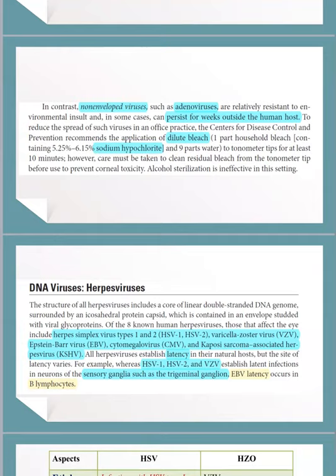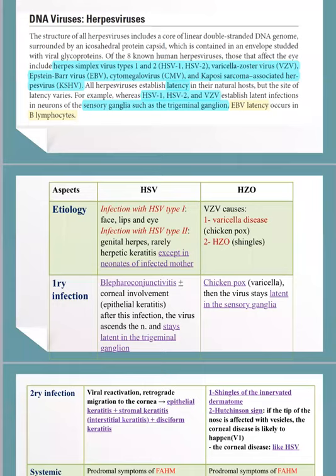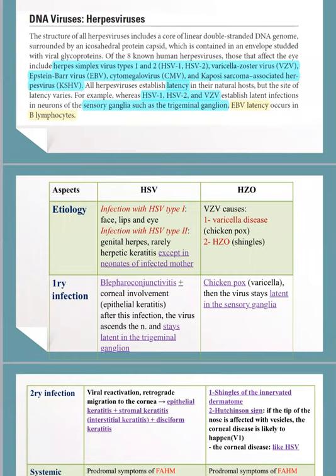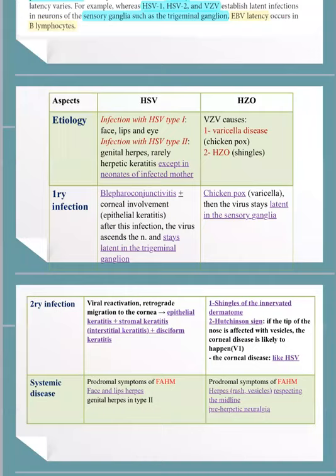From the DNA viruses, the herpes viruses are most important. There are five types: herpes simplex virus, varicella zoster virus, cytomegalovirus, Epstein-Barr virus, and Kaposi's sarcoma-associated herpesvirus. Herpes simplex and varicella zoster virus will be discussed in great detail, including herpes zoster ophthalmicus.